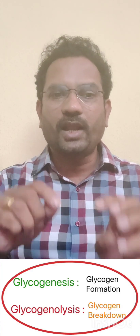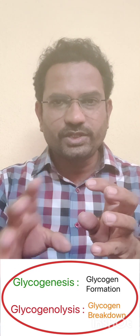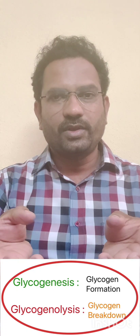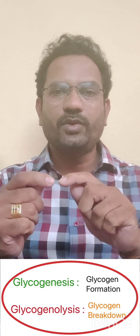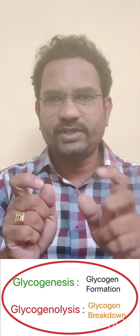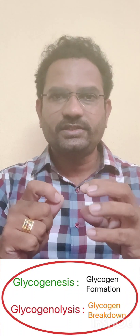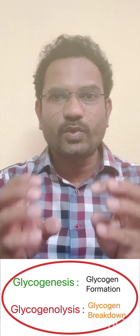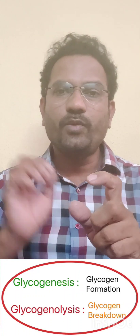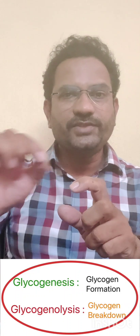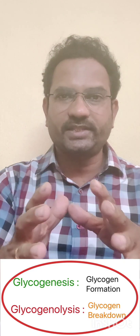Next is glycogenolysis and glycogenesis. 'Lysis' means breakdown, so glycogenolysis means glycogen breaks down. Glycogenesis means glycogen formation. Each glycogen molecule is roughly formed by one lakh glucose molecules. When glucose molecules combine with branching, that process of glycogen formation is called glycogenesis.